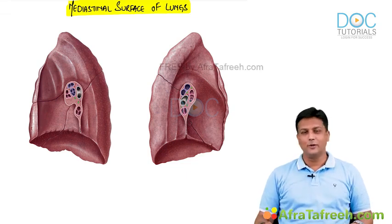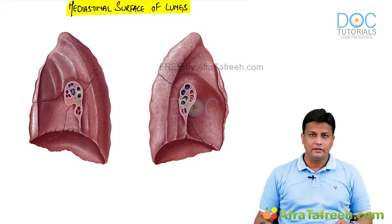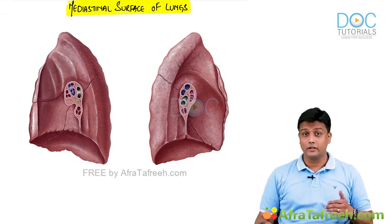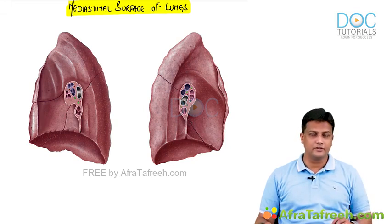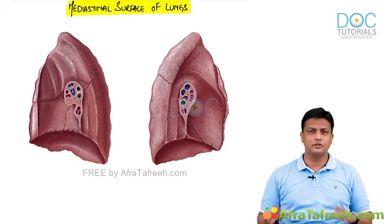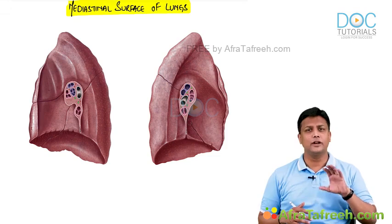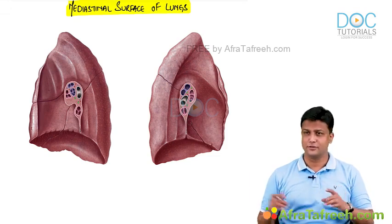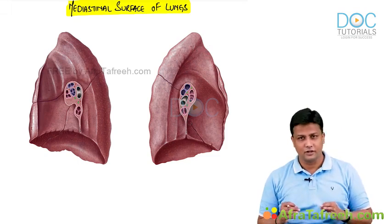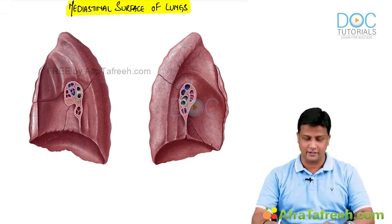Welcome back. The next topic we are going to discuss is the mediastinal surface of the right lung as well as the left lung. We are also going to see what structures are related to the mediastinal surface of both lungs, and when this image is given in your exam, you should be able to identify which impression represents which structure. Please look at the screen — beautiful pictures of the right lung and the left lung, the mediastinal surface.